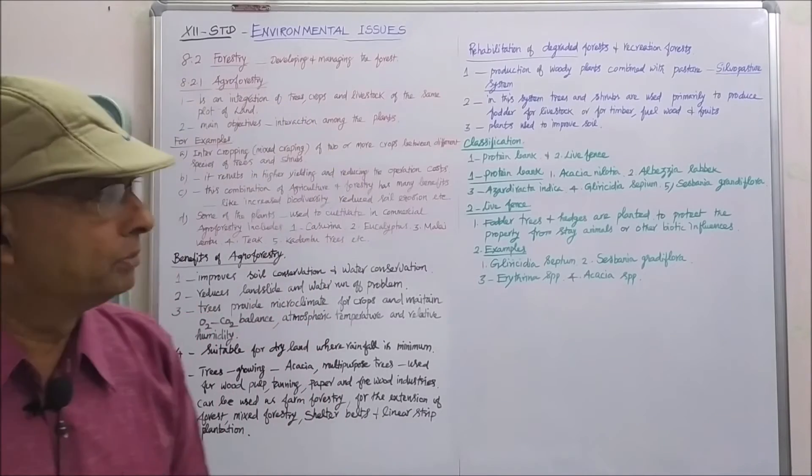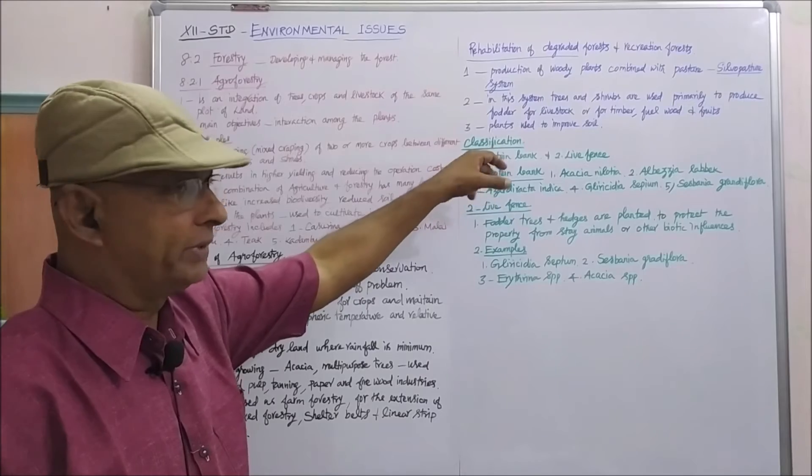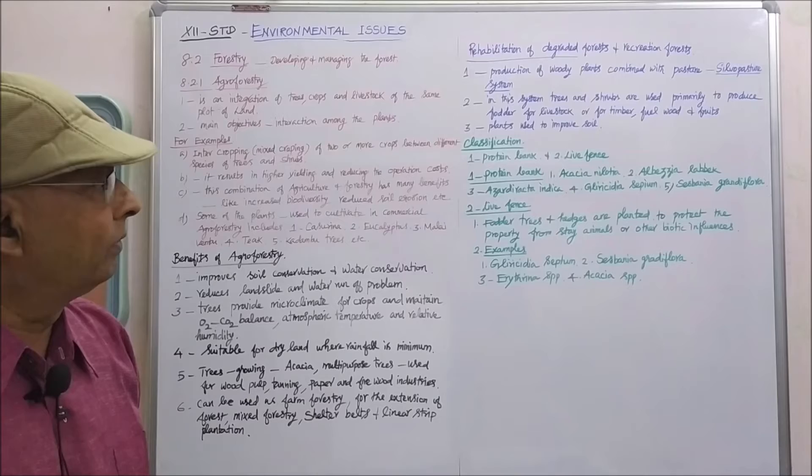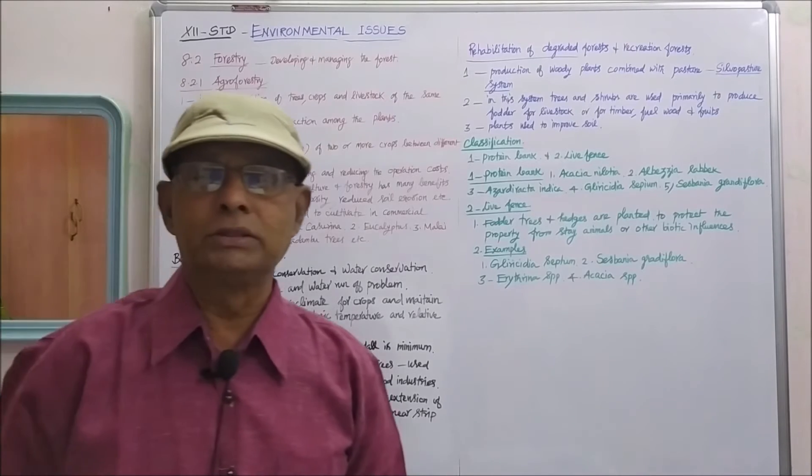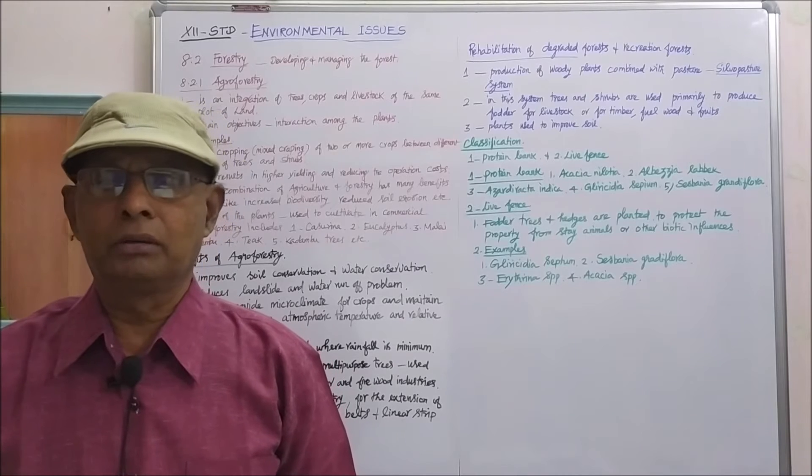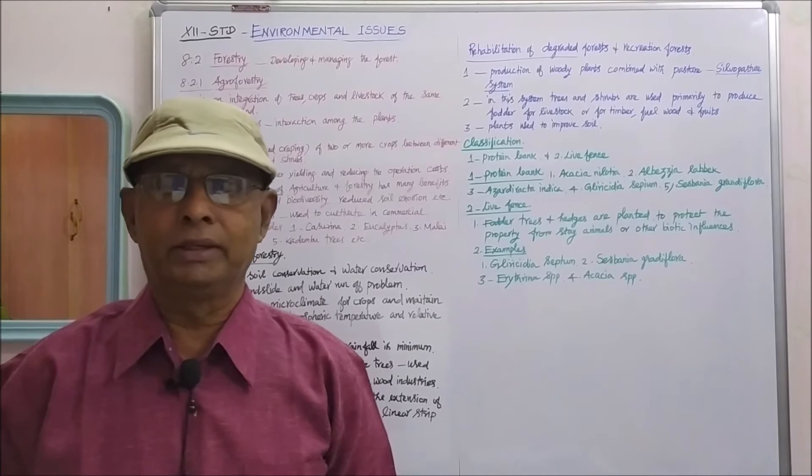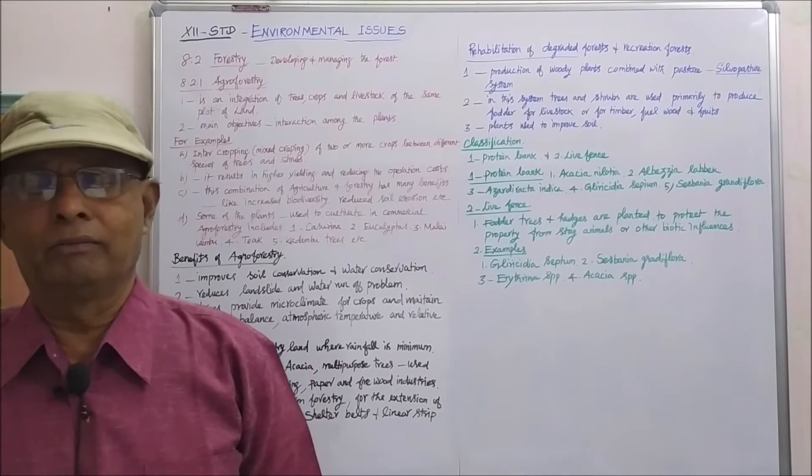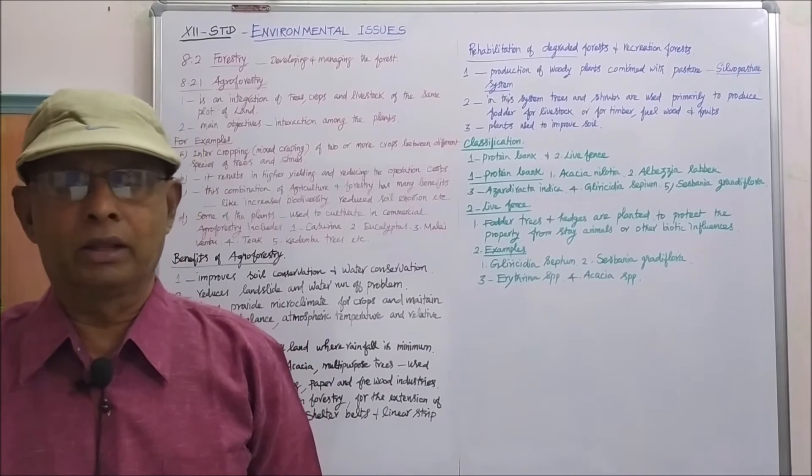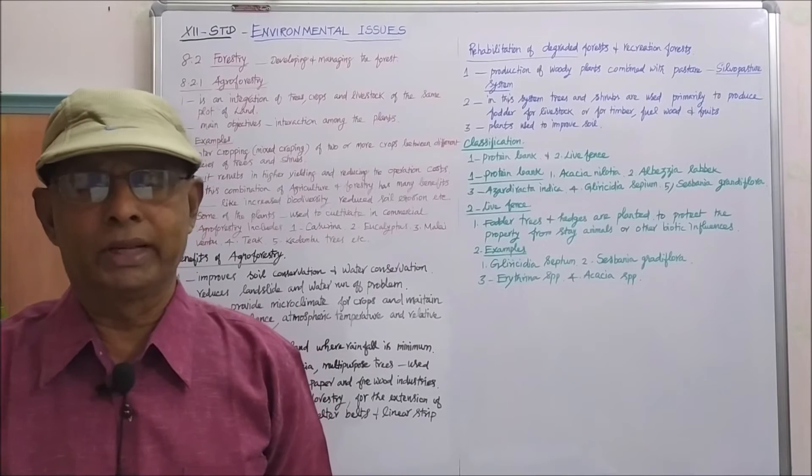Now, come to the classification. The silvopasture system is classified into two types. One is a protein bank and another one is a leaf fence. What is a protein bank? Multi-purpose trees are planted in and around the land for fodder production. When the multi-purpose trees are planted in and around the land for fodder production, that is called protein bank.